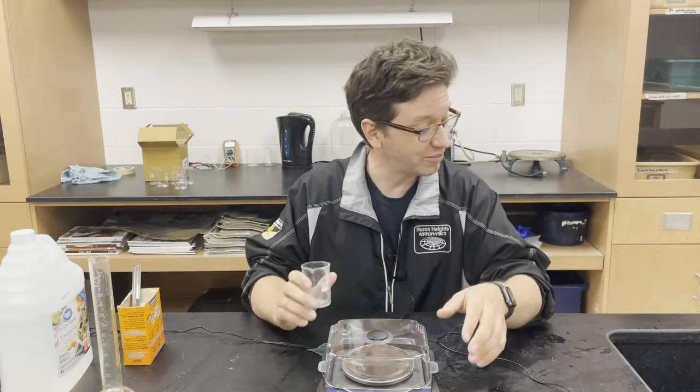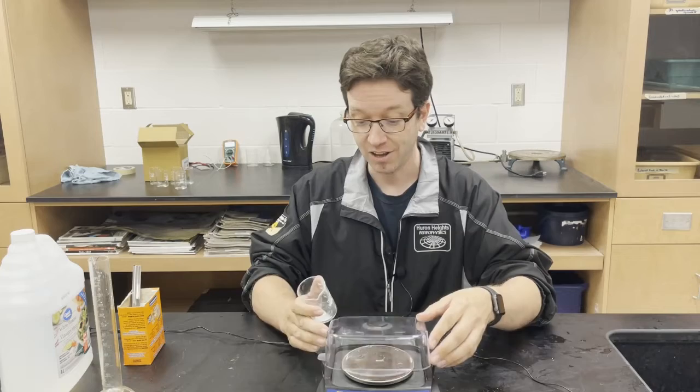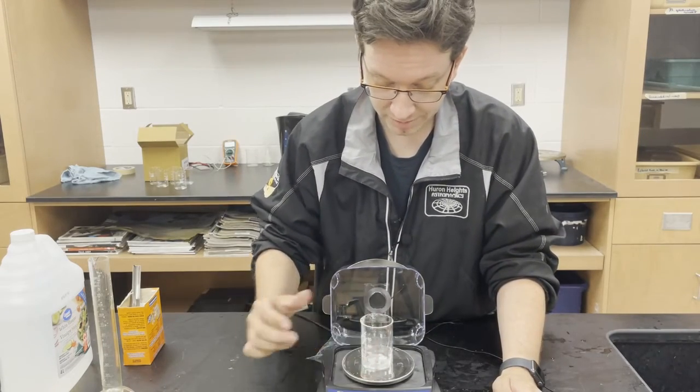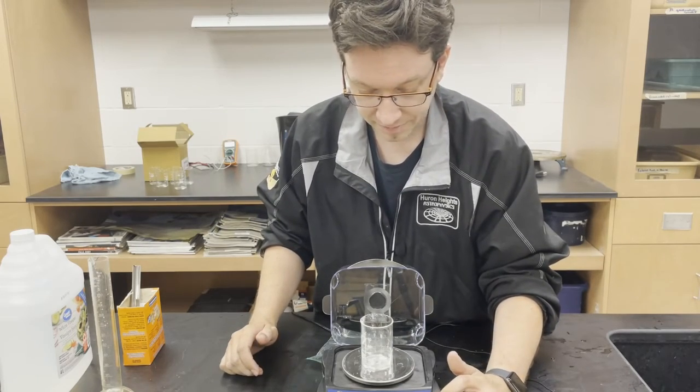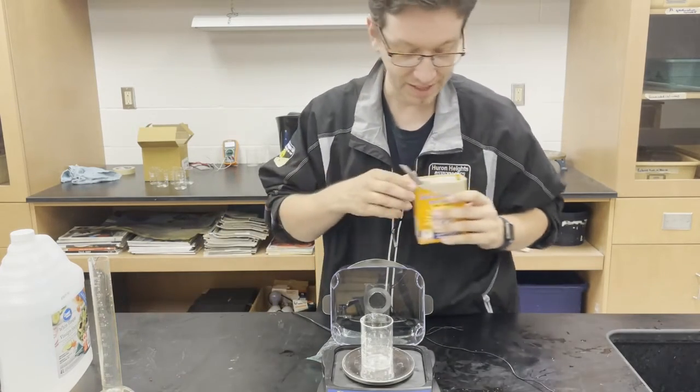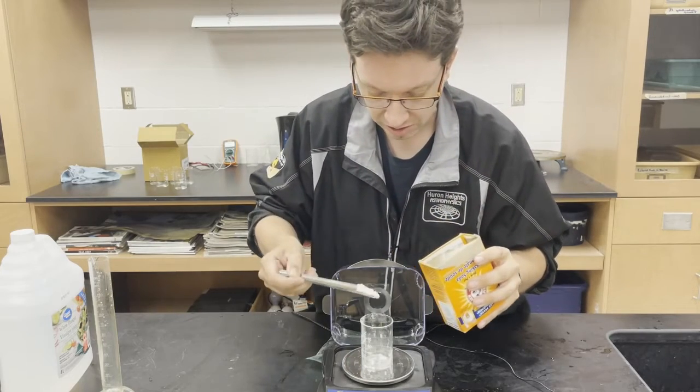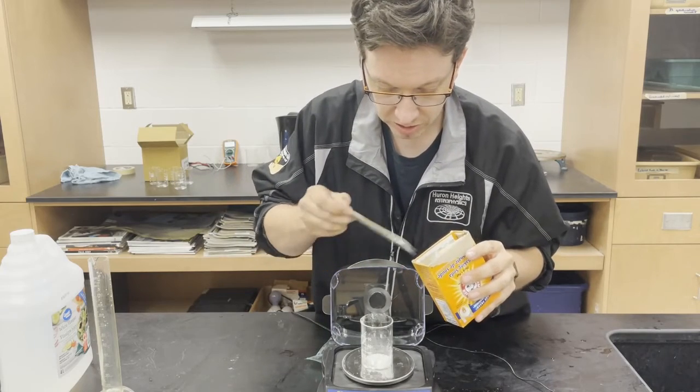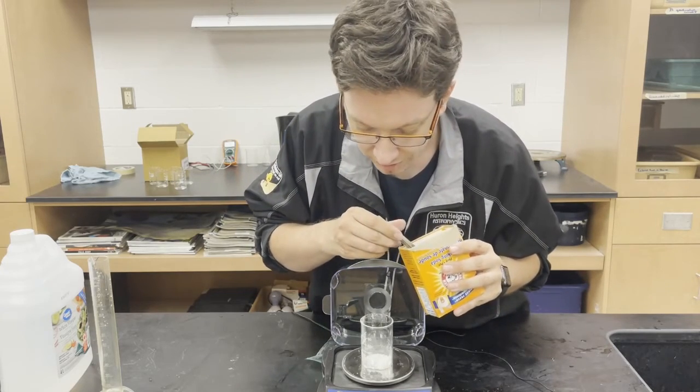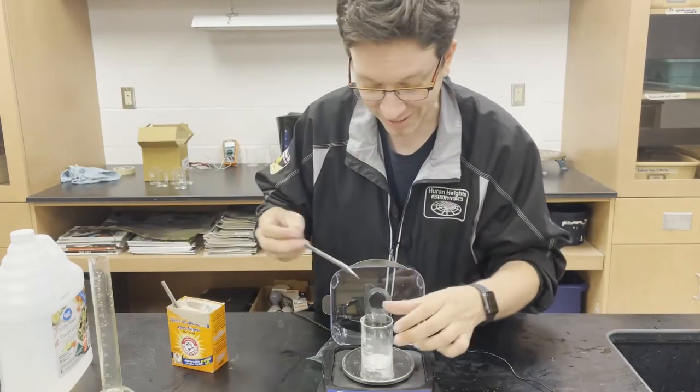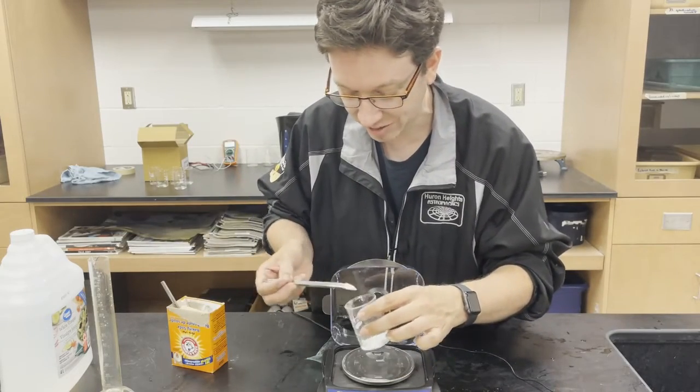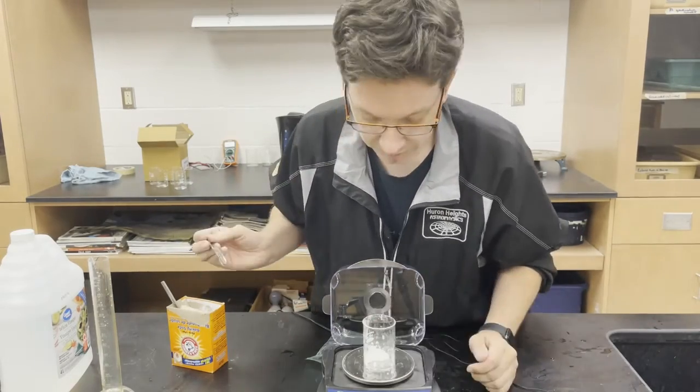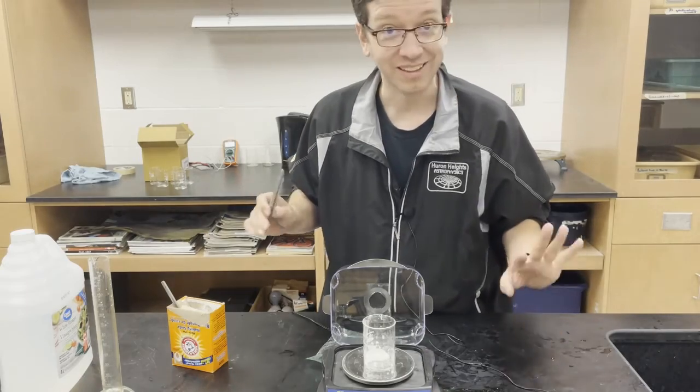Okay, so we need 2.714 grams of sodium bicarbonate or baking soda. So I'm going to take my scale here, put on a beaker, and then I'm going to re-zero. And then we need 2.7. So that's 1.5. 3.4 is too much, so we need to get rid of some of that. 2.720. That's close enough.